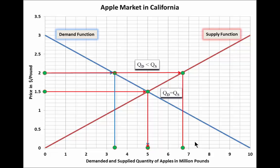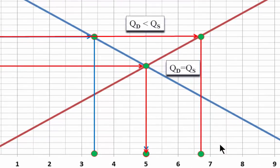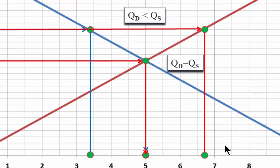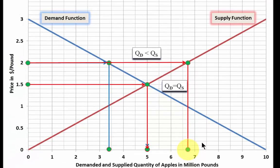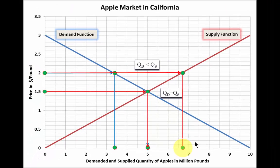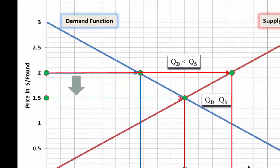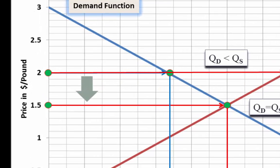We can see that a price of 2 dollars generates a situation where quantity demanded is less than quantity supplied. The quantity demanded is further to the left, towards smaller numbers, than the quantity supplied. Pause the video and check it out for yourself. What happens if fewer goods are wanted than are supplied? The price falls and thus moves towards the equilibrium price of 1.50.